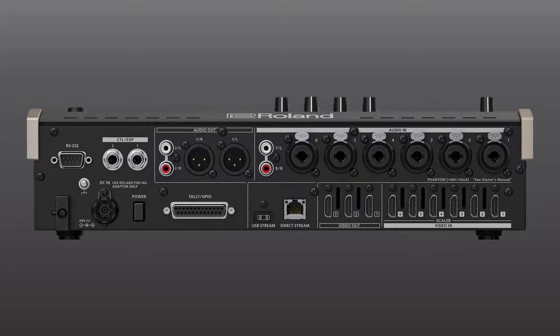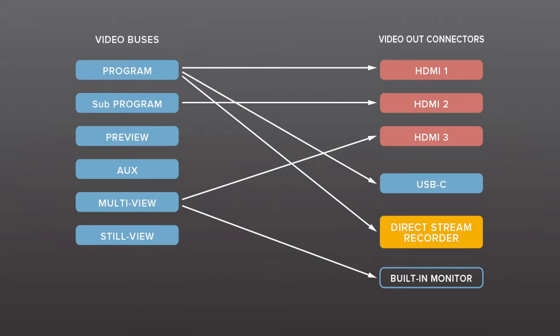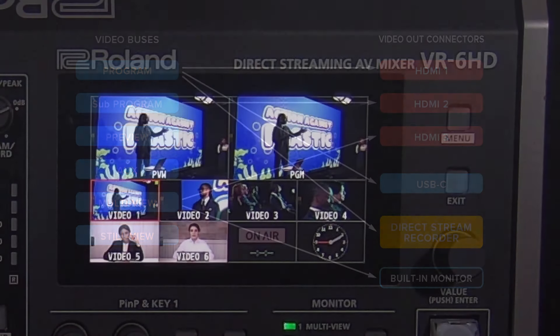The three HDMI, LAN, and USB streaming outputs can be customized to output program, aux, multiview, and more, giving you flexibility in reducing the need for signal converters, as multiple outputs can share the same video bus. Note that when you open the menu, it'll appear only on the LCD screen.